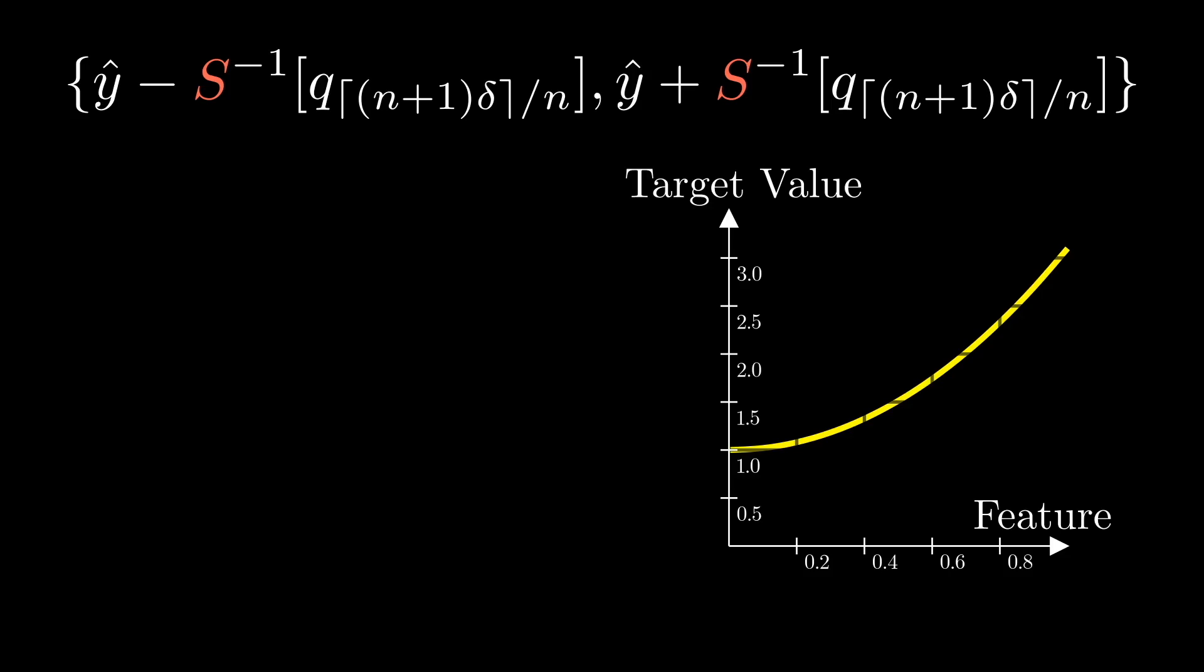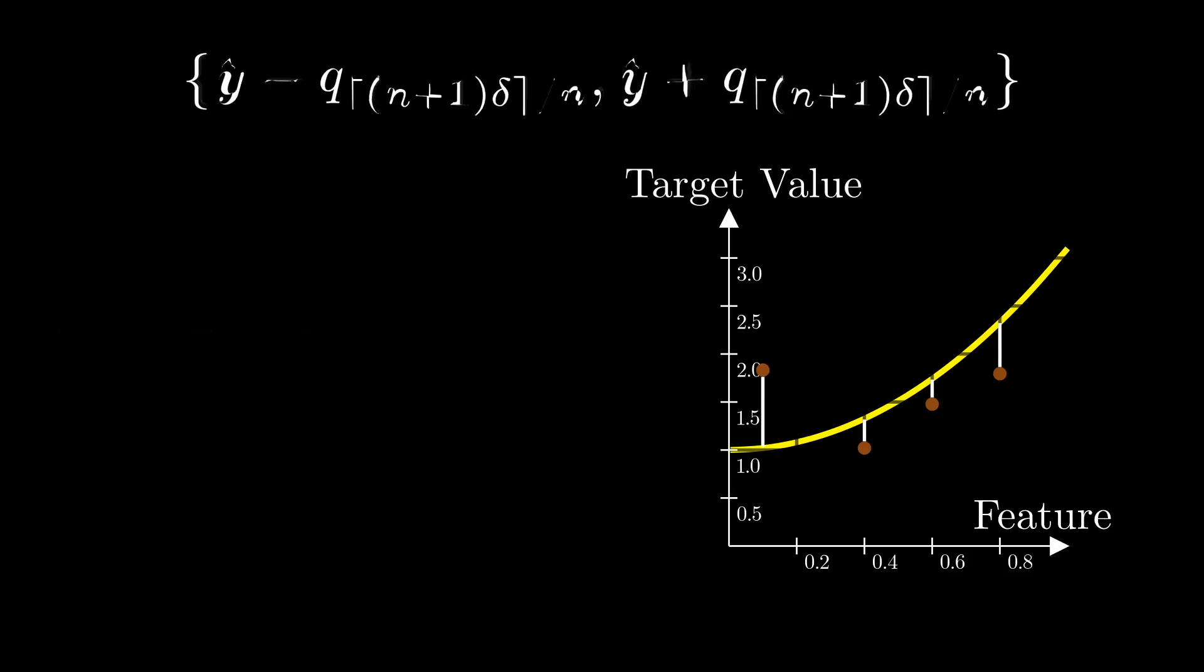Next we have s, the non-conformity measuring function. It's a function of the error that the point predictor makes for a given point. In its simplest form, it can be the absolute error between the point prediction y hat and the true label y. Then we have the superscript minus one which shows we are talking about the inverse of the s function. When s is the absolute error function, its inverse will be equal to the input of the function itself, so we can simplify the equation by simply eliminating s minus one. This is something we can do only when our non-conformity measuring function s is equal to the absolute errors and not otherwise.